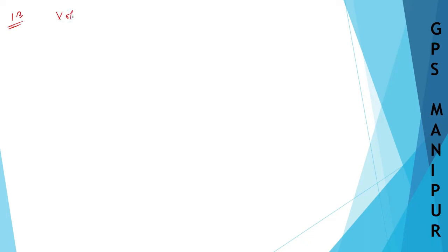Now we are doing exercise 12.3, question number 13. The question says we need to find the volume, the curved surface area, and the total surface area of a cone.